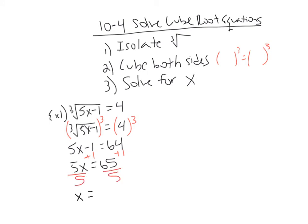And we can divide by 5, so 65 divided by 5 is 13. Now, before we box our answer, what should we always, always do? We should always check. So if we come over here to check, how do we check? We plug it back in. We go back to the original. So I go back to the original, cube root 5x. Well, what is x here? x is 13, minus 1. Let's see if we indeed get 4. Well, 5 times 13 is 65, minus 1 is 64.